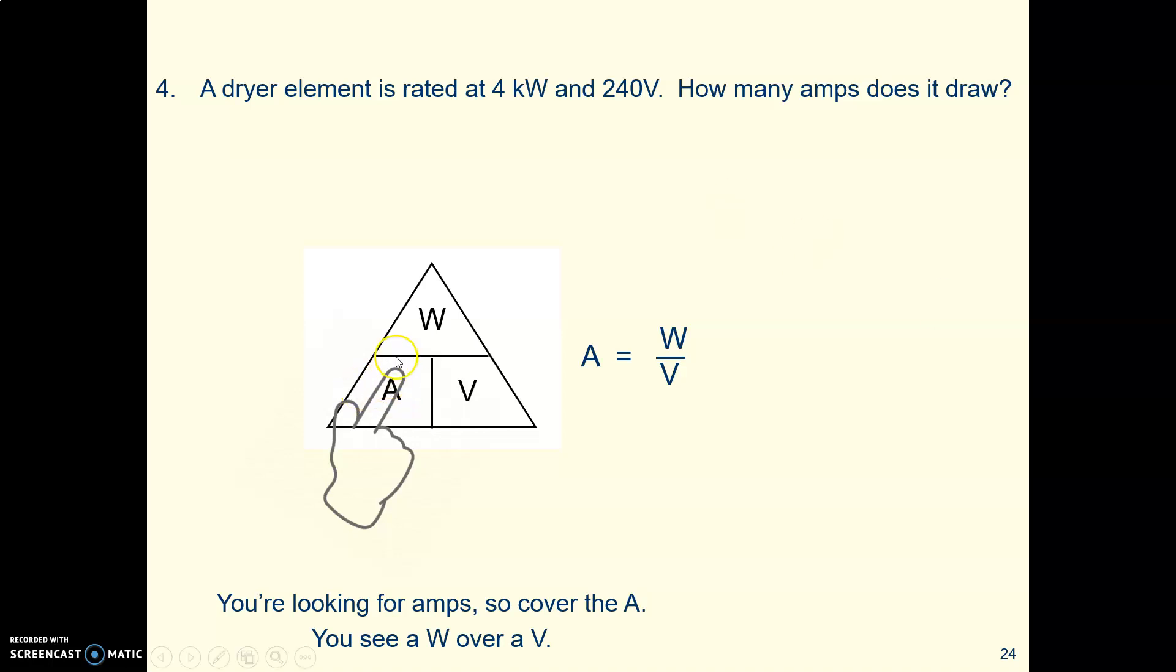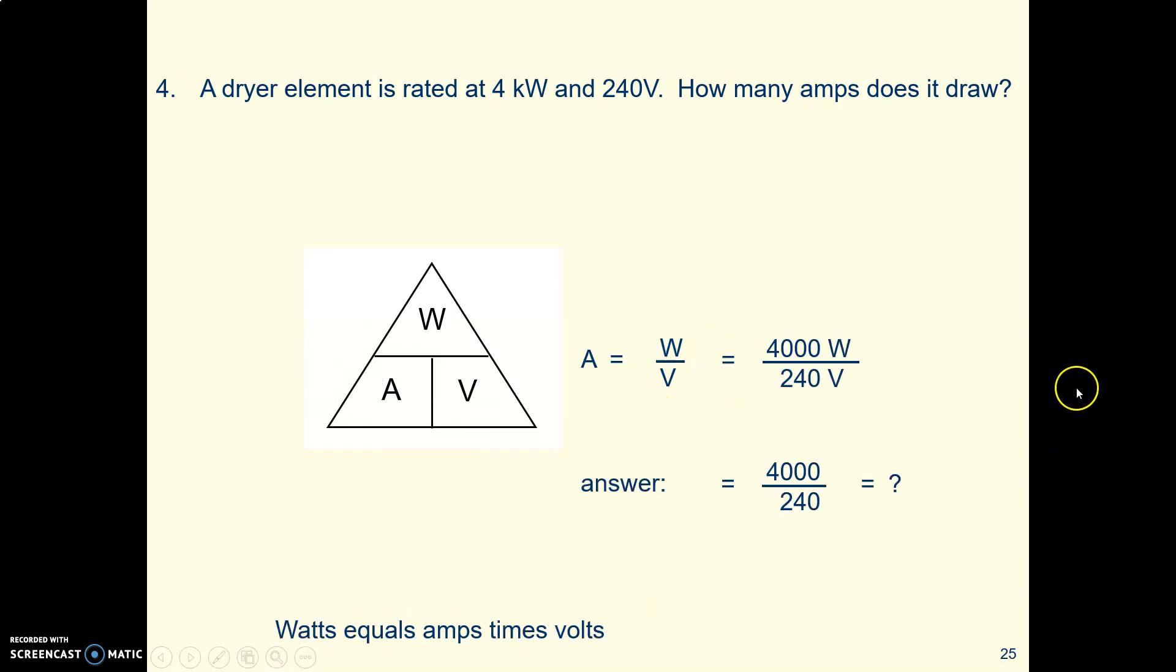You're looking for amps. So you cover up the A with your finger. You're left with a W over a V, watts divided by volts. And you know that you have 4000 watts. And it's being pushed by 240 volts. So with your calculator, you'll punch in 4000 divided by 240. And that will tell you how many amps you're drawing, how many amps is getting pulled through that wire.